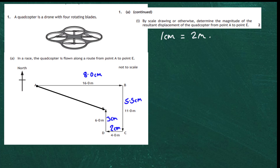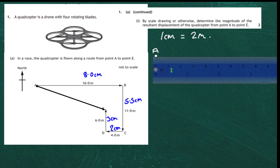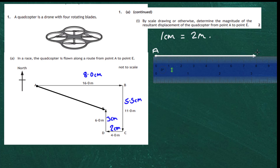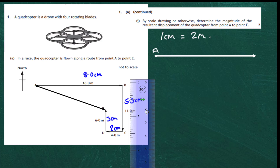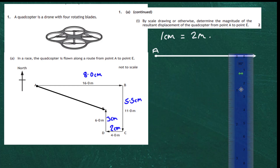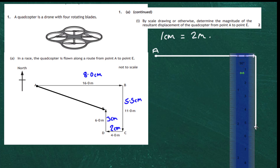We use our ruler, starting with a point for A. Grabbing the ruler, we measure out a vector exactly 8 centimetres and draw that line — that's the A to B vector. We then turn the ruler and move it to draw in 5.5 centimetres. That gets us to the next point, completing the B to C vector.